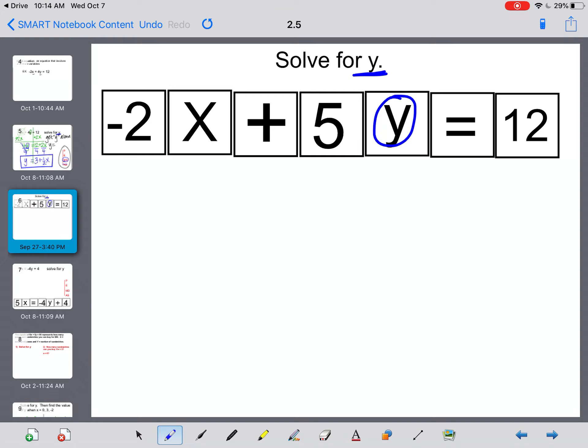This one is also asking me to solve for y, so this is what I want to get by itself. The reason I have these in blocks is because you could actually physically move them if that helps you. But we're going to try just following order of operations backwards. Much like last time, we're getting y by itself, and we're going to start with adding and subtracting.